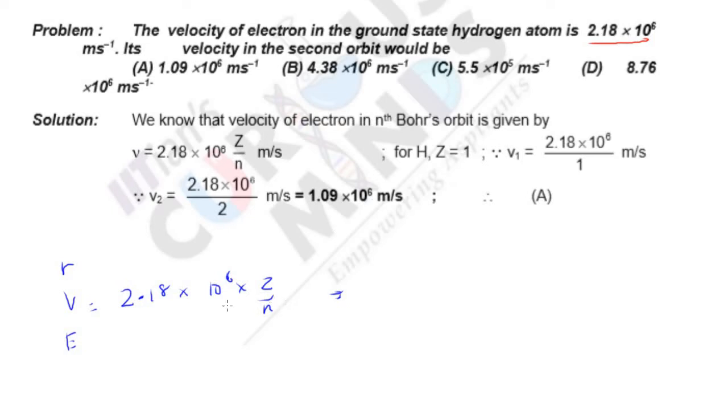For the second orbit, it is simple. It will be 2.18 × 10^6 divided by 2, so the answer is 1.09 × 10^6 meters per second. But remember this: